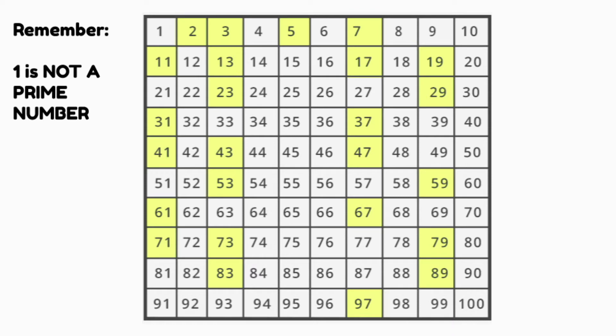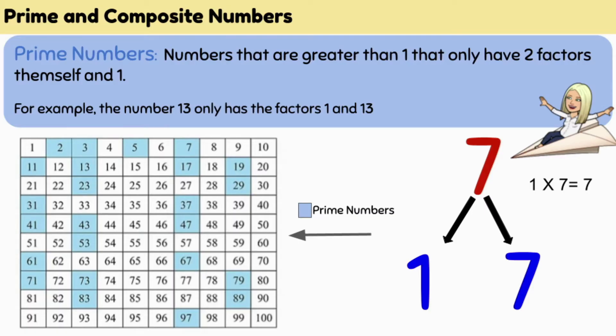These numbers are important and we call them prime numbers. It is important to note that one has only one factor and therefore is not a prime number. So prime numbers are numbers that are greater than one that only have two factors, which are themselves and one.